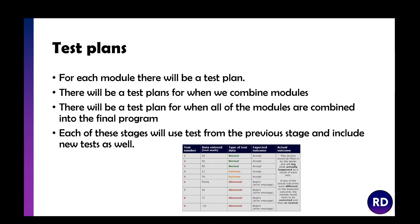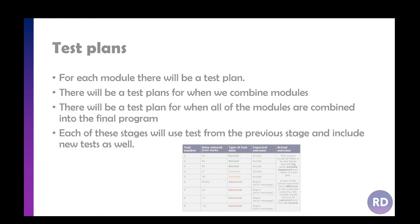In your test plan you'll be putting in what test you've got — usually numbered one, two, and so on — what you've entered, what type of test it is, what you expect to happen, and then what actually happens. So if you've got a test that rejects something that it shouldn't, for the actual outcome you explain what happens. You then fix the problem and go back and retest it.